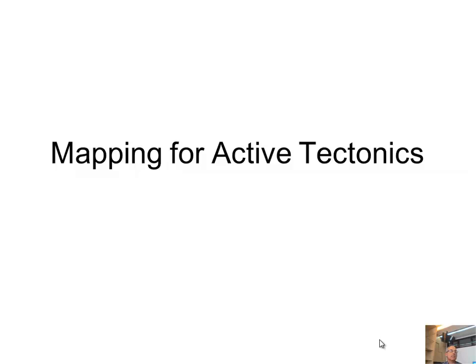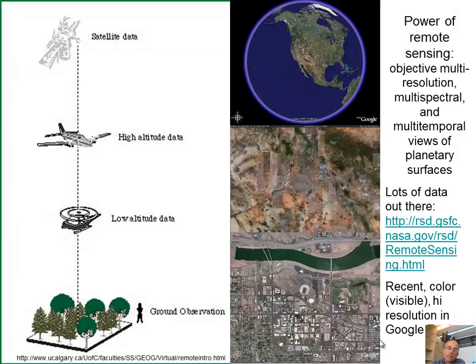The name of this lecture and practicum is mapping for active tectonics. The first point is we need remote sensing data. Remote sensing is objective, multi-resolution, and multi-temporal. Objective means it's taken from afar with no judgment. Multi-resolution is the critical issue — it's how big the representation on the ground is of the target, so 90 meters or one meter; in general higher resolution is better. Multi-temporal means we can measure change by repeat remote sensing.